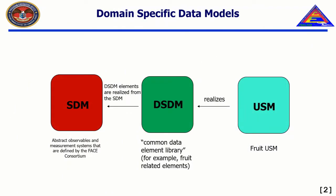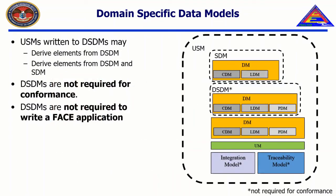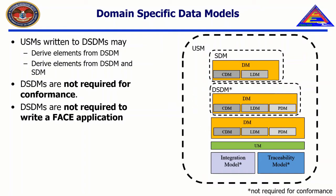Similar to SDMs, domain-specific data models, or DSDMs, are models designed to capture the domain-specific semantics and generally do not contain UOP models in a domain of interest. For example, a domain of interest could be fruits. The fruits DSDM might define entities, associations, and queries that relate to fruits such as size, seed type, and parent plant. USMs written to DSDMs may derive their elements from the DSDM, the SDM, or both if needed. DSDMs are not required to be written to achieve FACE conformance. It is possible to use only the SDM each time a USM is written.